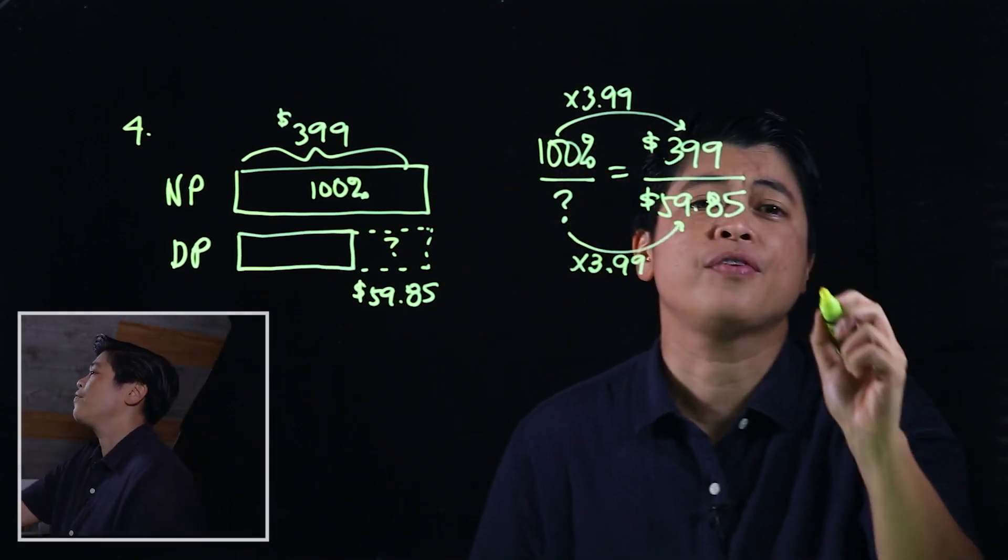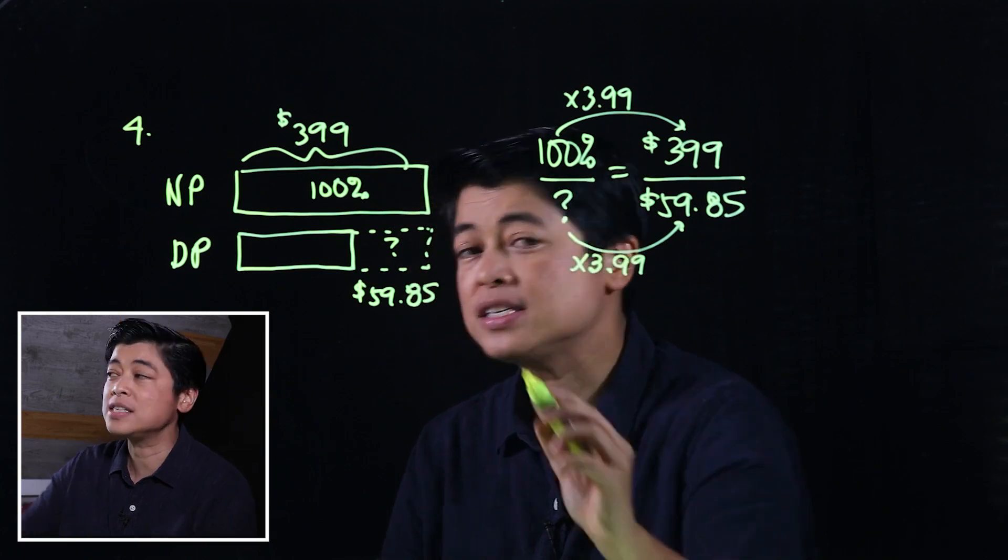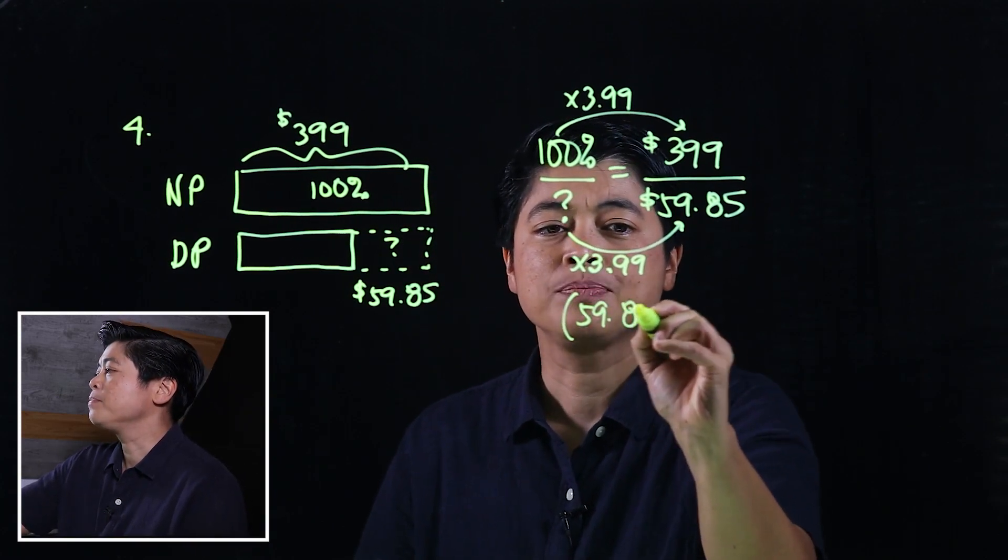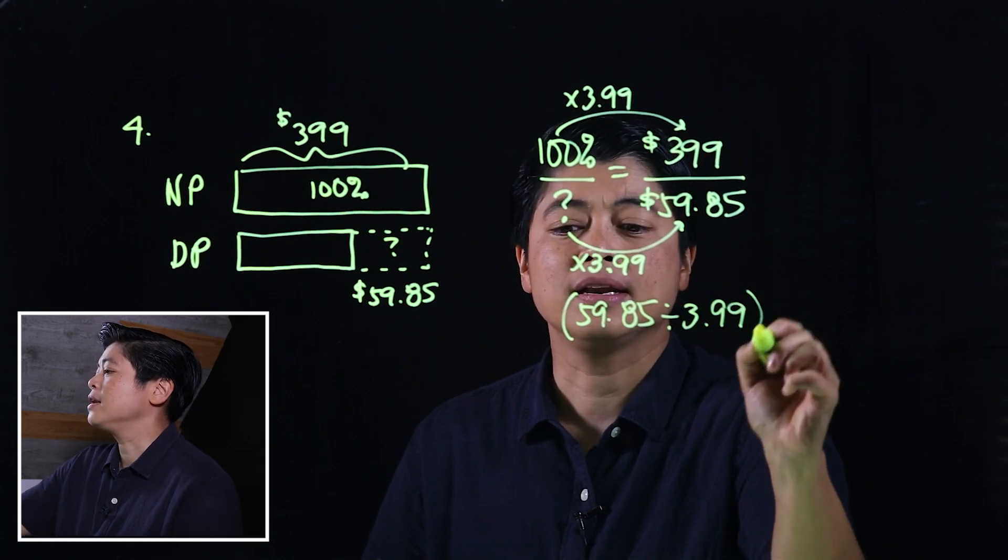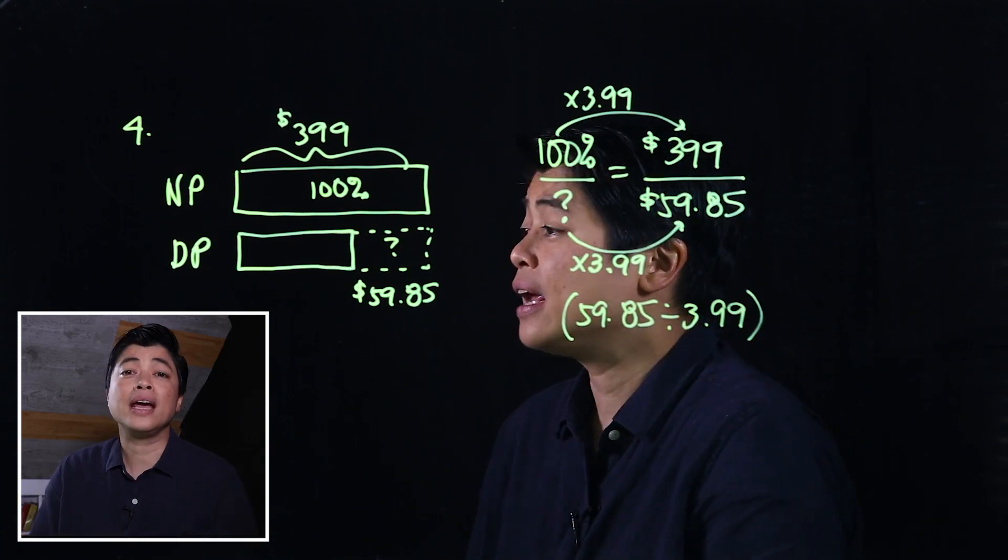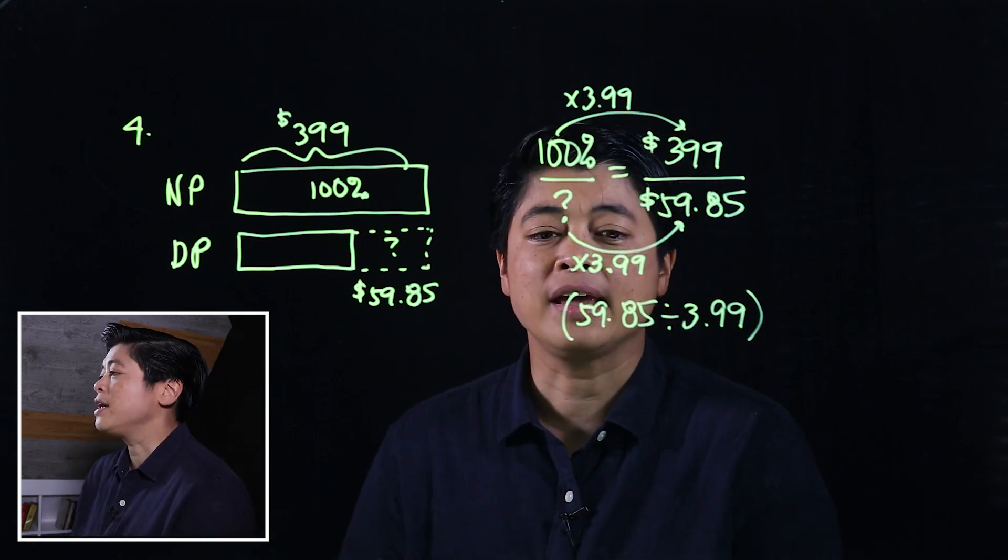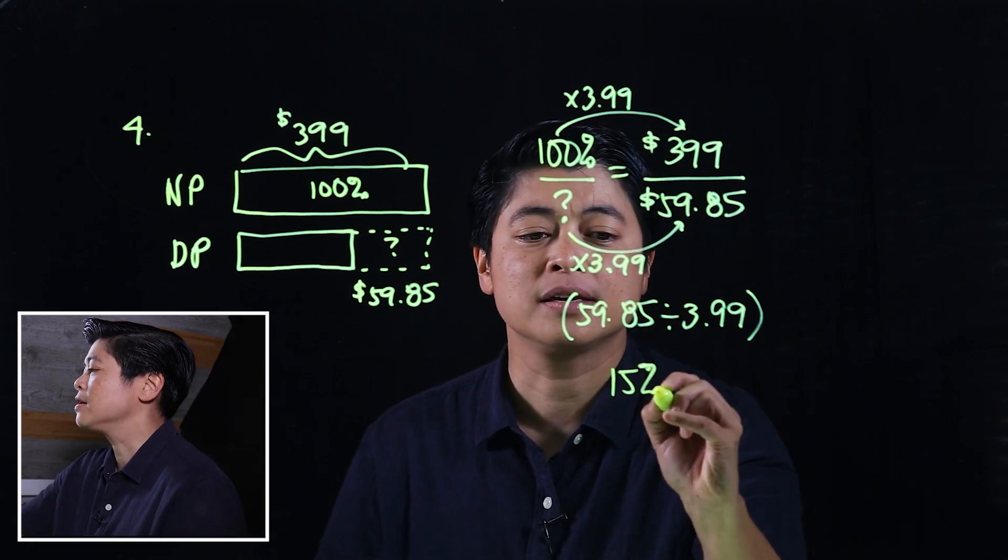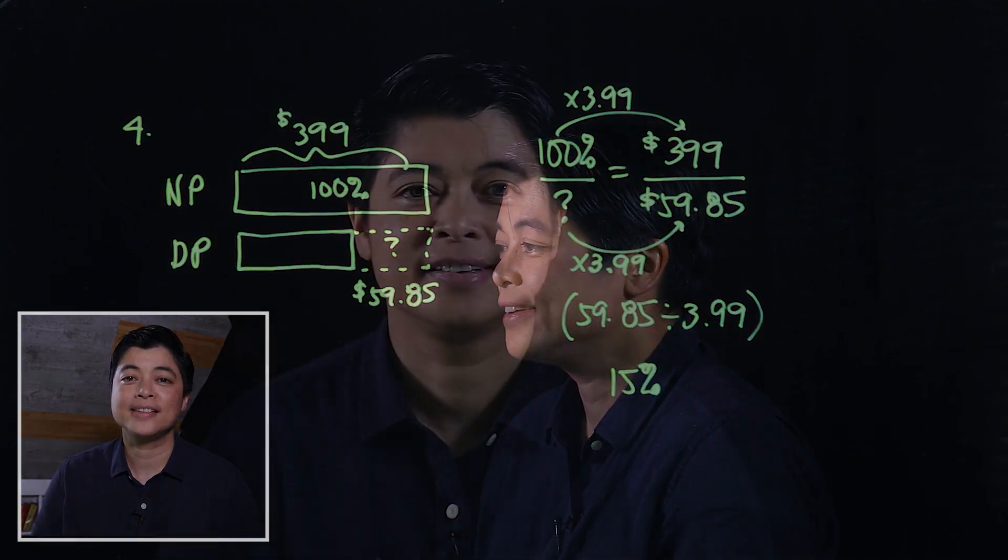So if I have to go backwards, I would have to $59.85 divided by $399. And when I do put that in the calculator, I should get 15%, which means the discount given to her was 15%. That concludes lesson two of chapter four. I'll see you in the next lesson.